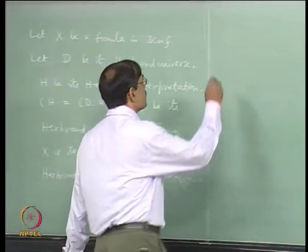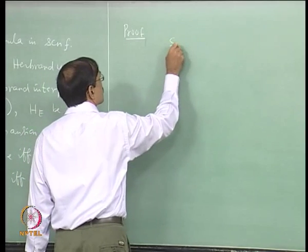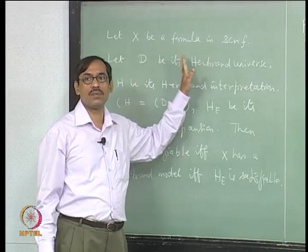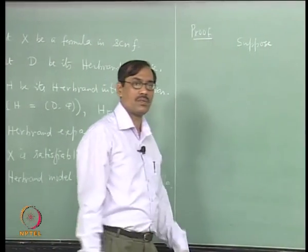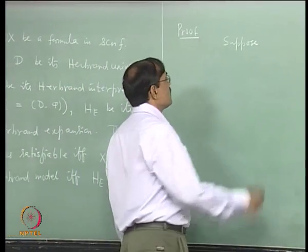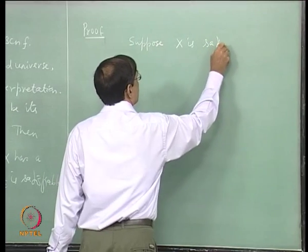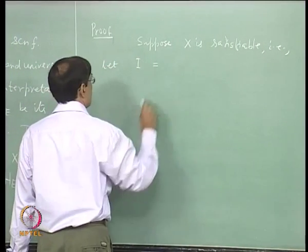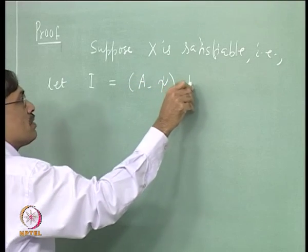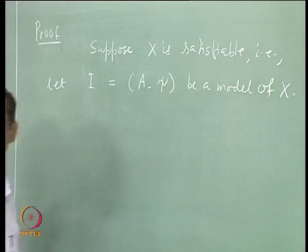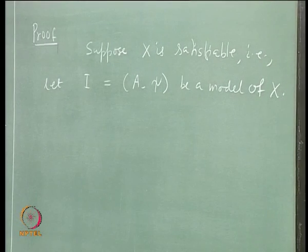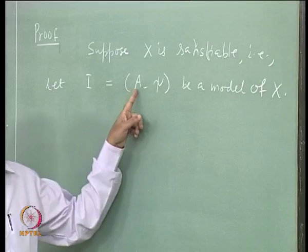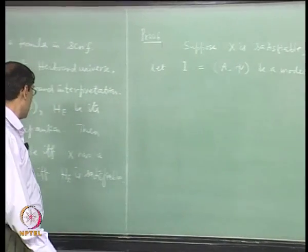Let us see the main part first. Suppose X is satisfiable. We can take X to be a sentence, because all the free variables are assumed to be universally quantified. Once X is satisfiable, it will have one model. Let (A, psi) be a model of X. A is some non-empty set; psi is the map which interprets the predicates, function symbols, and constants. They will map to A, which is our domain now. We want to show that this has a Herbrand model.